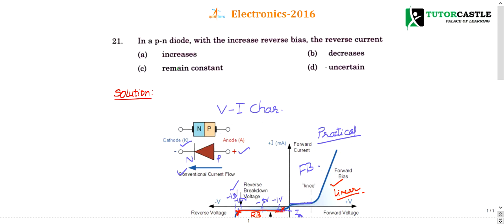Let's see the options. In a PN diode with increase in reverse bias - reverse bias means reverse voltage - the reverse current, what happens? Will it increase? No. Will it decrease? No. Will it become uncertain? No, uncertain means like breakdown. Will it remain constant? Yes, it remains constant. So the right choice is option C.